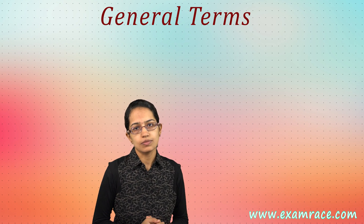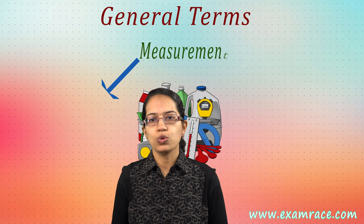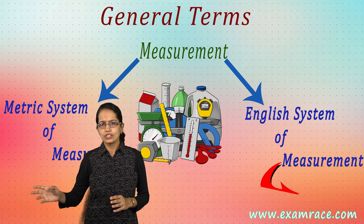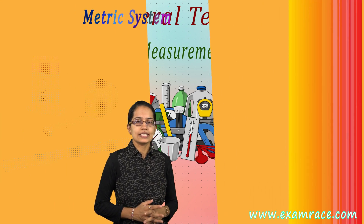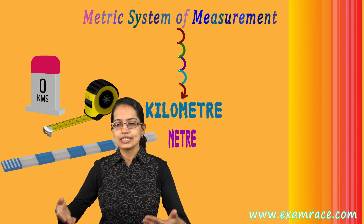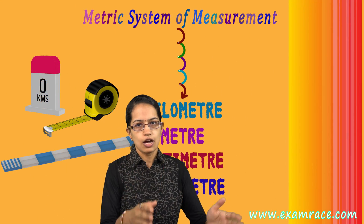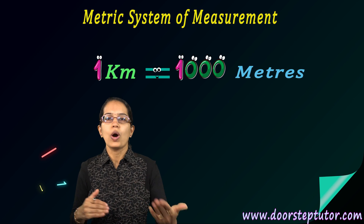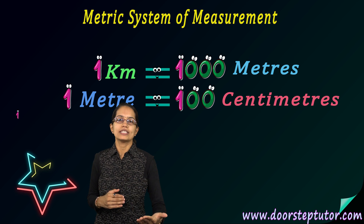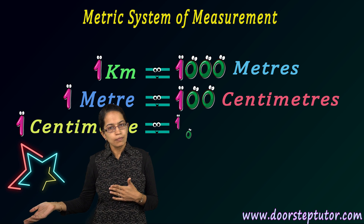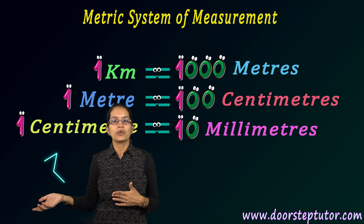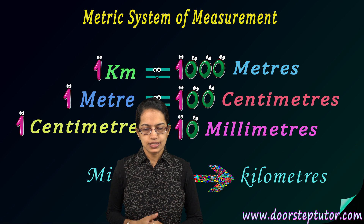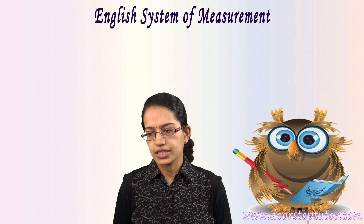One is the metric system and the other is the English system, commonly seen in the UK and America. In the metric system: one kilometer equals 1000 meters, one meter equals 100 centimeters, and one centimeter equals 10 millimeters. So if I want to relate millimeters to kilometers, I can easily do that.